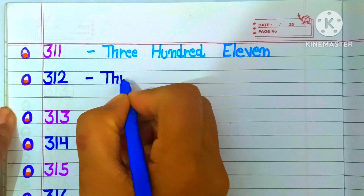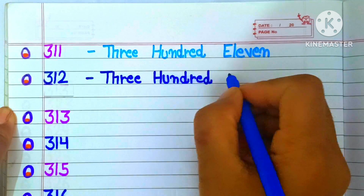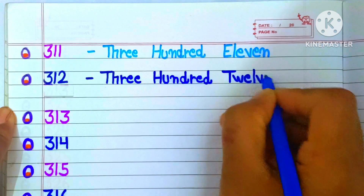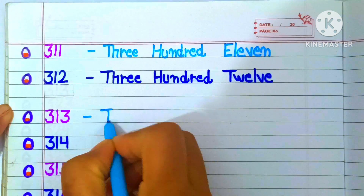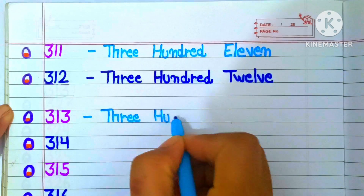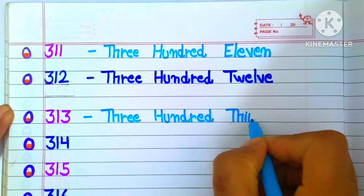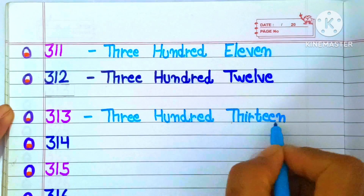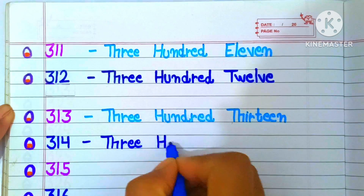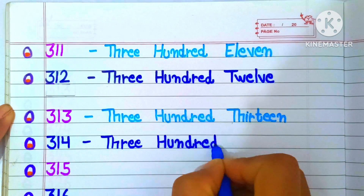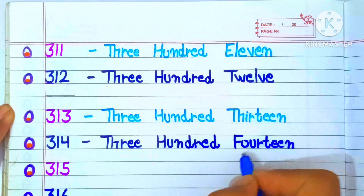312: THREE HUNDRED TWELVE. 313: THREE HUNDRED THIRTEEN. 314: THREE HUNDRED FOURTEEN.